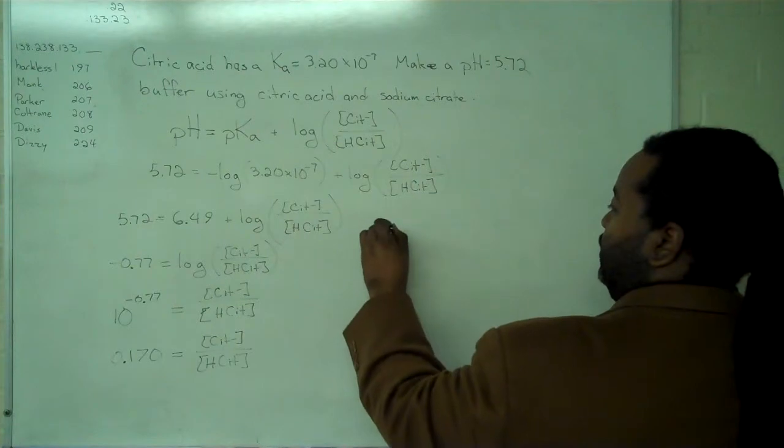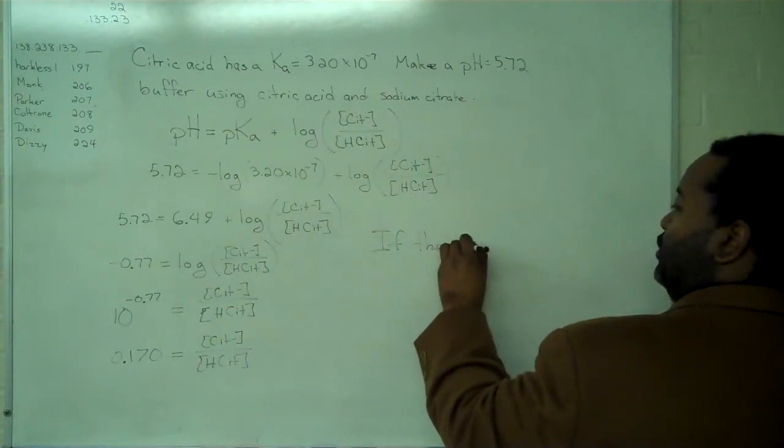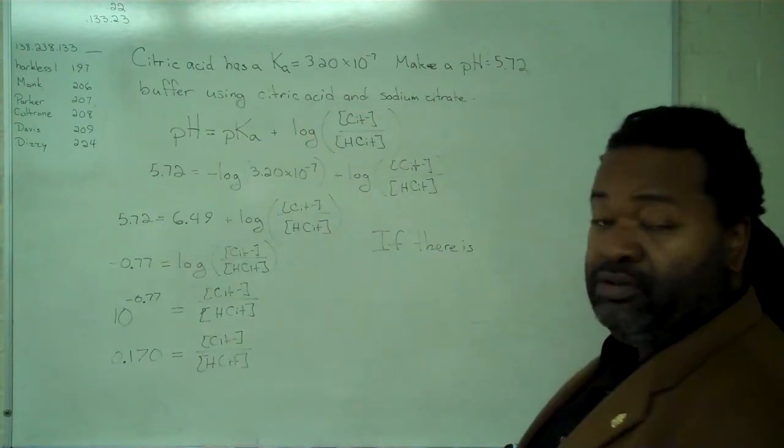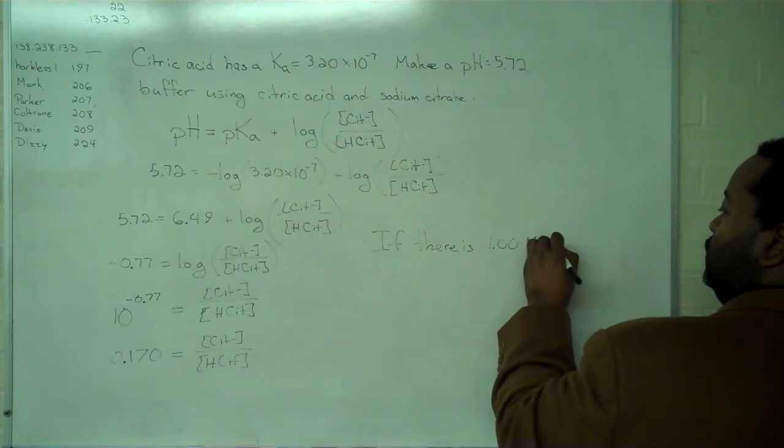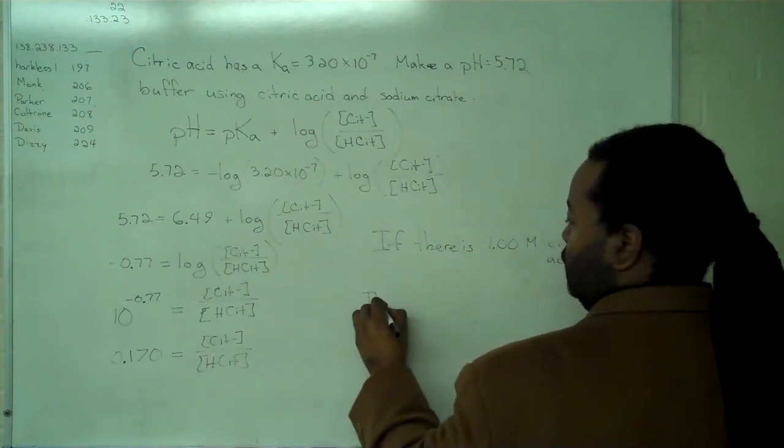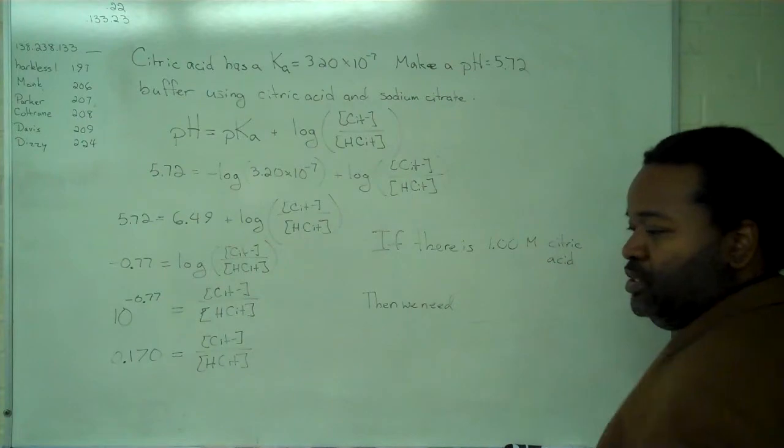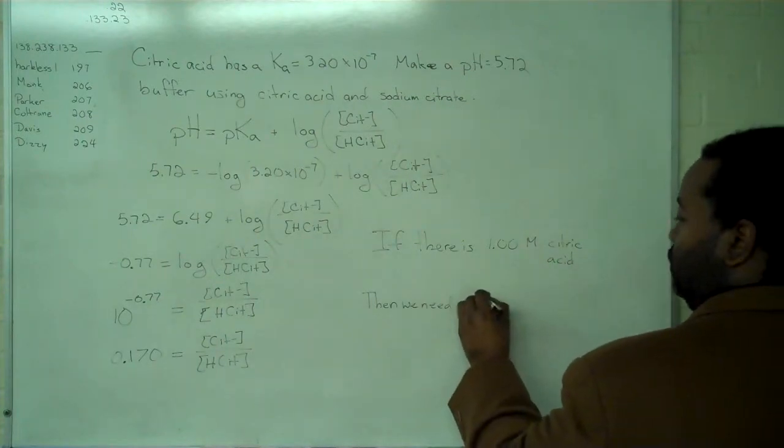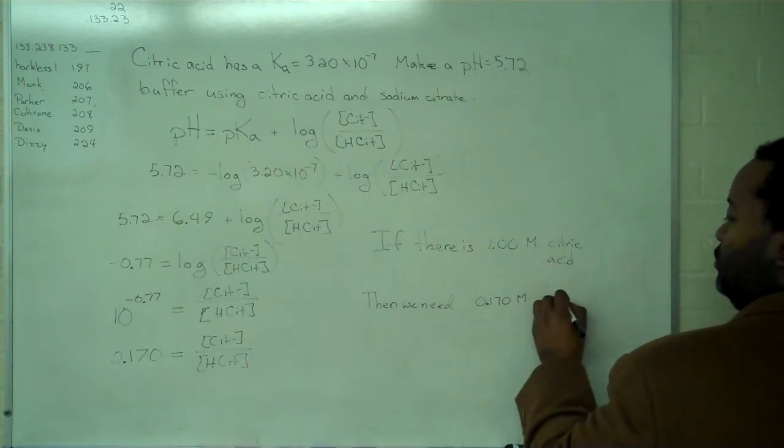So now that we have a numerical value for the ratio of these two, we can state that if there is, say, one molar citric acid, then we need to use 0.170 molar sodium citrate.